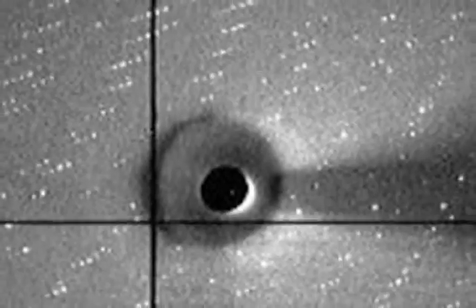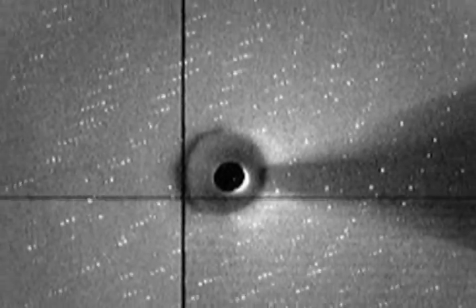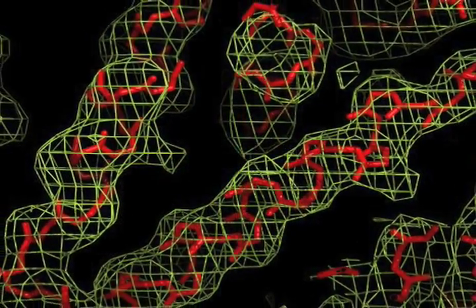What the computer does is something called a Fourier transform. We move from the data that's collected, which is in what's called reciprocal space, into real space. This gives us a three-dimensional picture of the electron density around a protein. The transformation from a hundred thousand to two hundred thousand or a million data points to the three-dimensional electron density is completely impossible unless you have powerful computing resources.